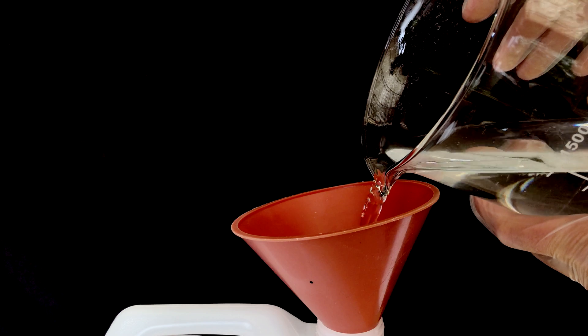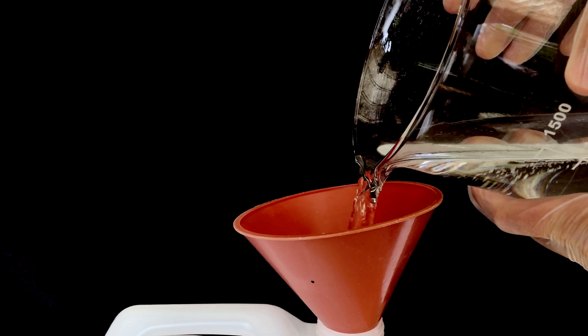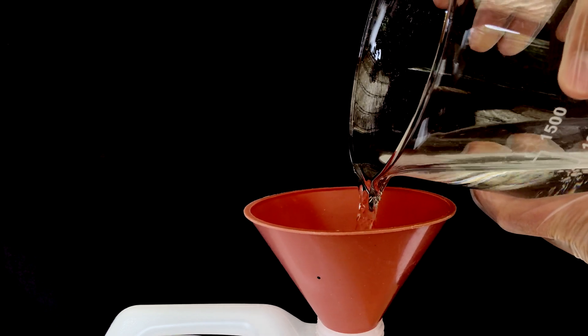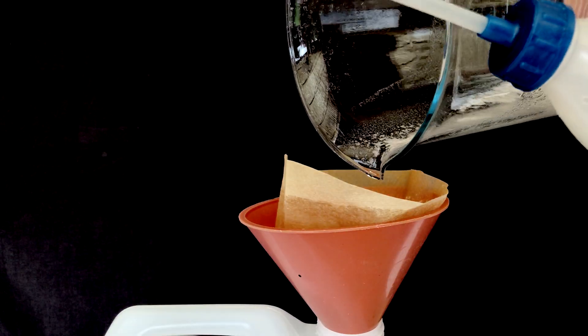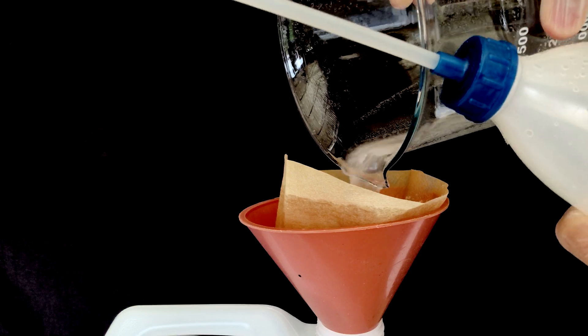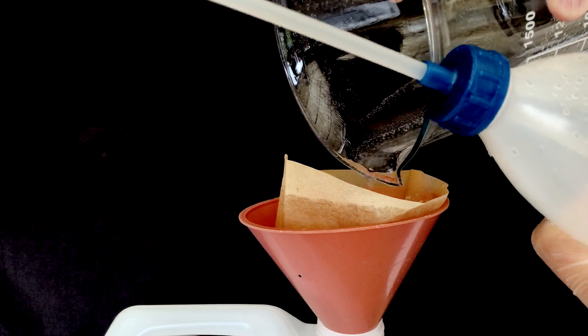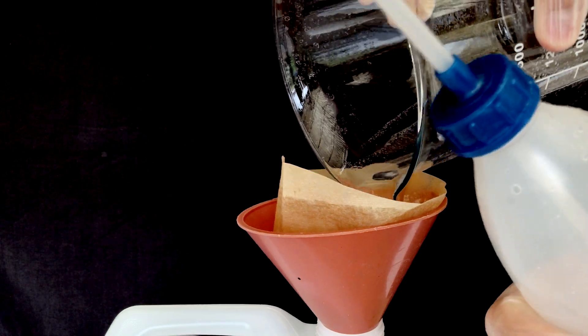Excess liquid was decanted off first before adding a filter to the funnel and filtering off the solids. To ensure no mercury thiocyanate is left behind, the beaker was rinsed using distilled water while holding it at an angle.